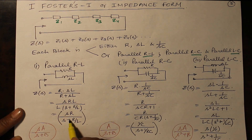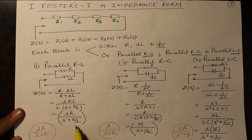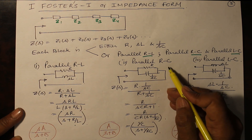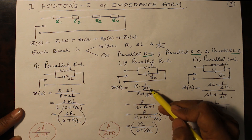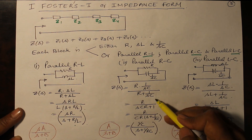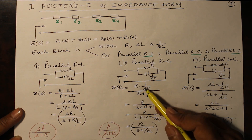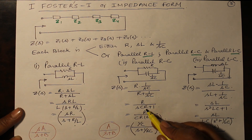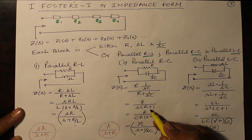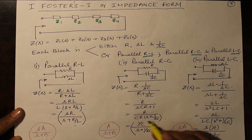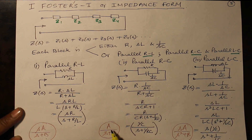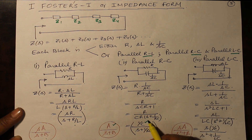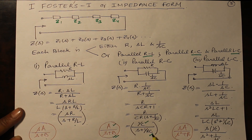For a parallel RL network, A equals R and B equals R/L, from which you can find both R and L. For a parallel RC network, R and 1/SC in parallel gives R·(1/SC) divided by R plus 1/SC. Solving this gives 1/C in the numerator and S plus 1/RC in the denominator, which is of the form A/(S + B) where A equals 1/C and B equals 1/RC.